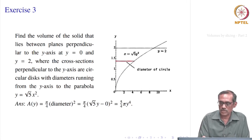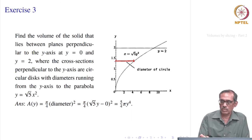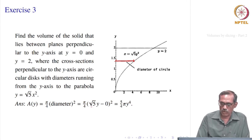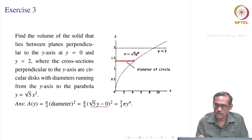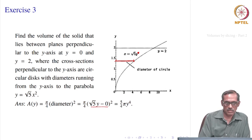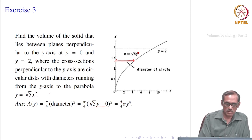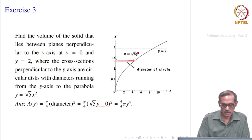We want to find the volume of this solid. All that we have to do is compute the cross sectional area — it is the disk whose diameter is given by this length, running from x = 0 to x = √5·y² for any point y. So its length will be √5·y², and the diameter equals √5·y².